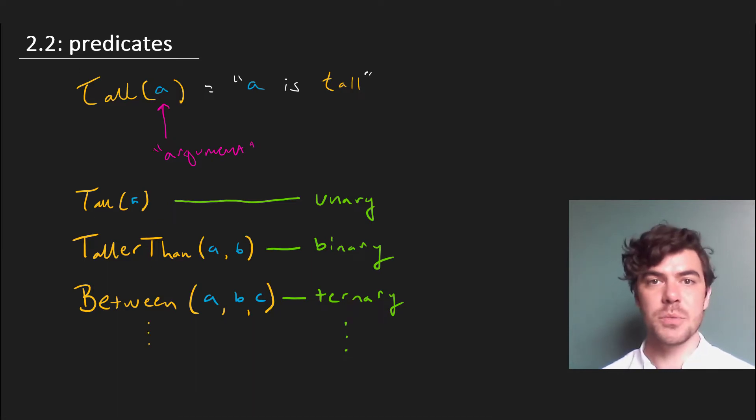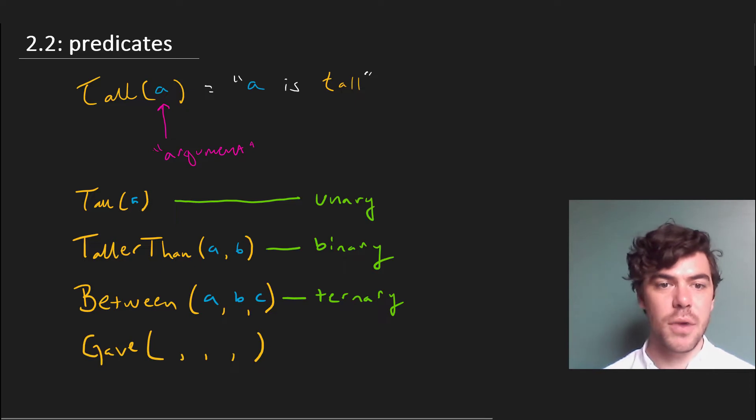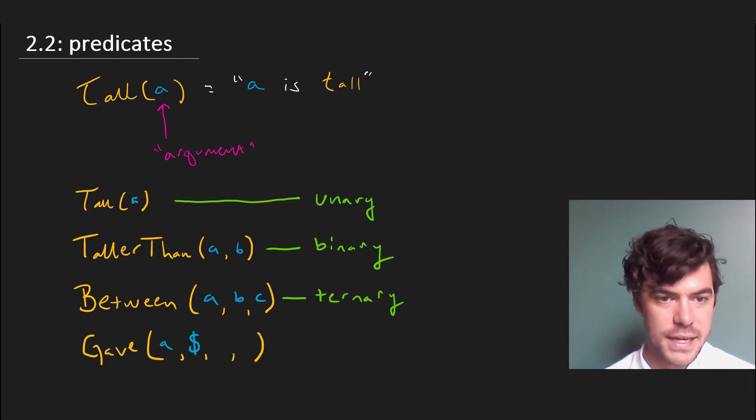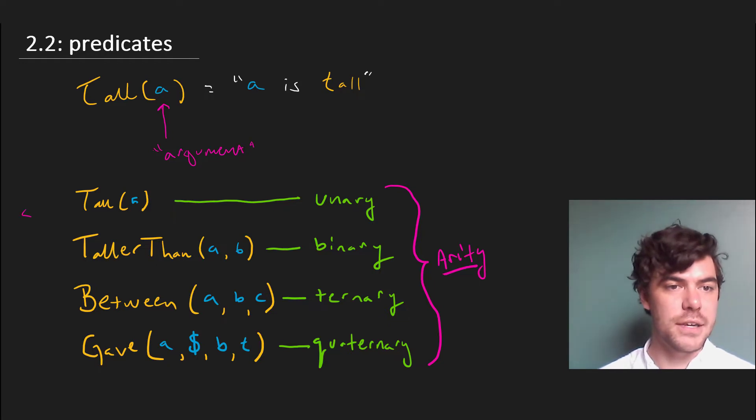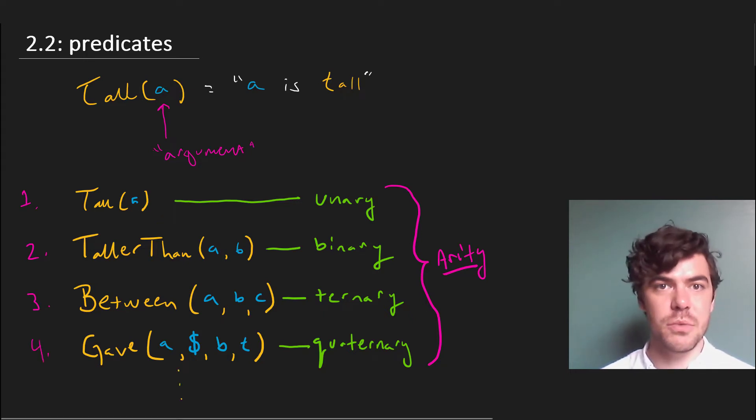There's absolutely no, in principle, limit on how many arguments these can take, although of course they get quite unwieldy. For example, consider a predicate like gave with four argument spaces, where you'd fill it out by saying something like A gave money to B at time t. So here we'd have a quaternary predicate. Now there's a technical term for all these aries, and that's just arity. So we speak of, for instance, tall having arity 1, taller than having arity 2, between having arity 3, gave arity 4, and so on for any complex predicates we wish to construct.